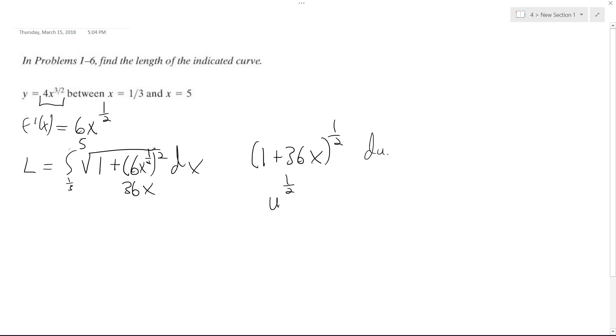So our du is going to be equal, so du is going to be equal to 36 times 1/2, which is equal to, actually should be 2/3, because of this.